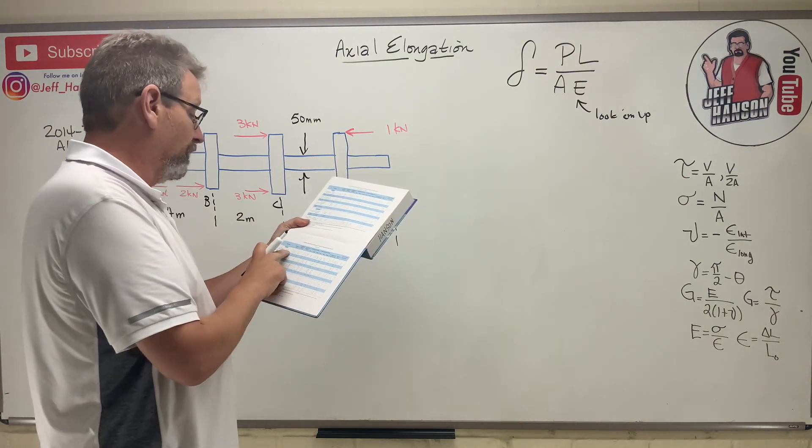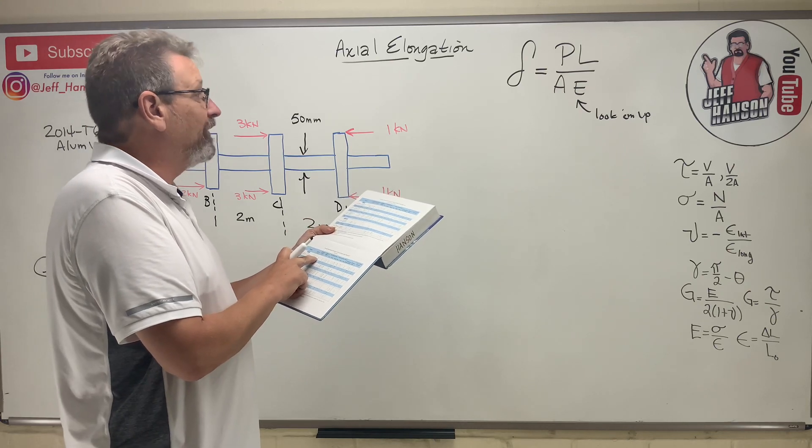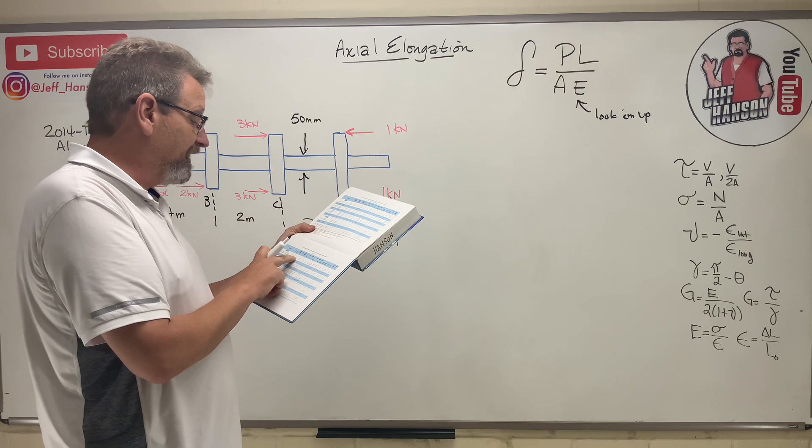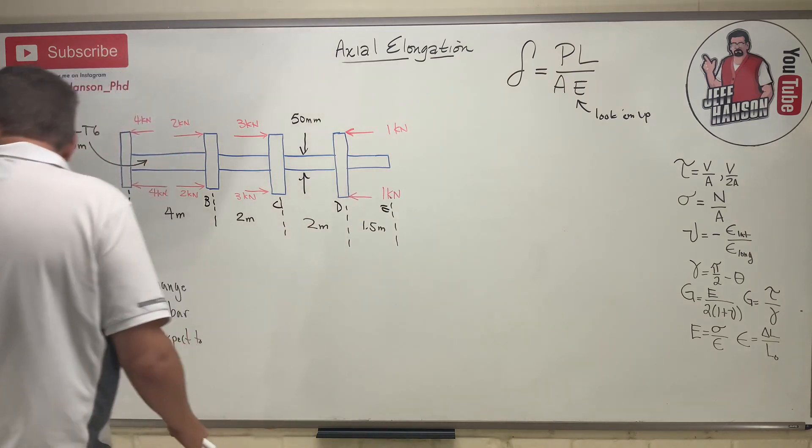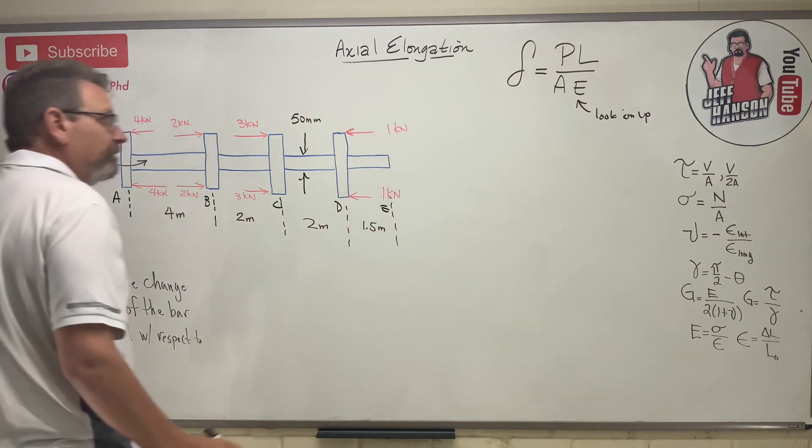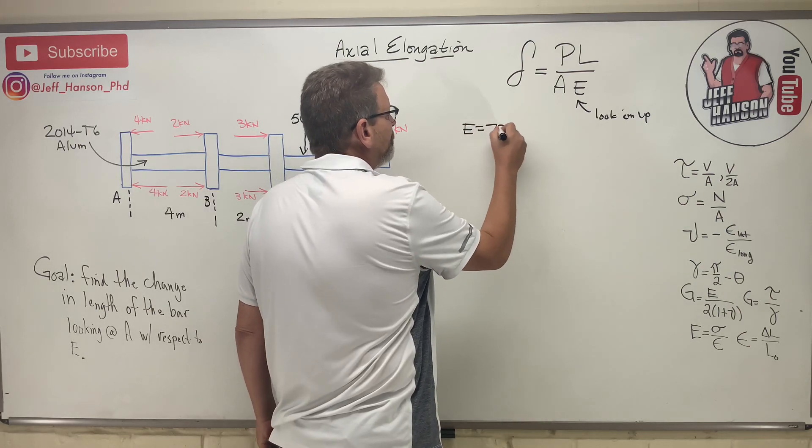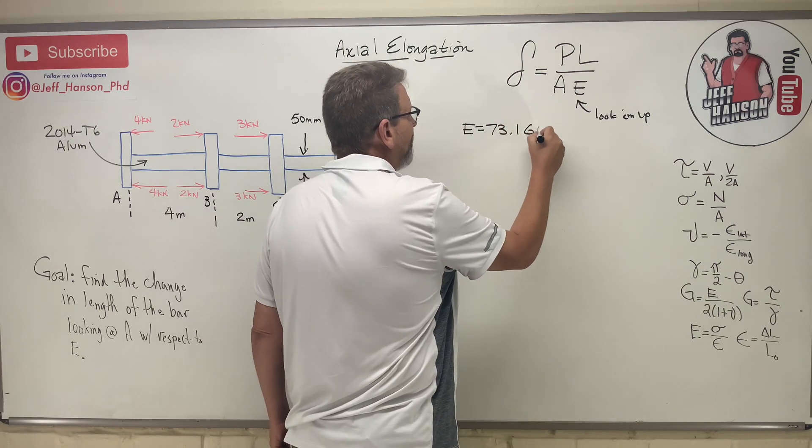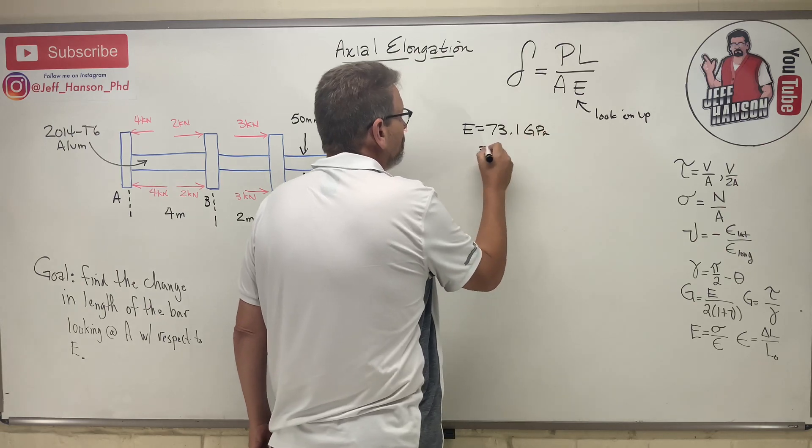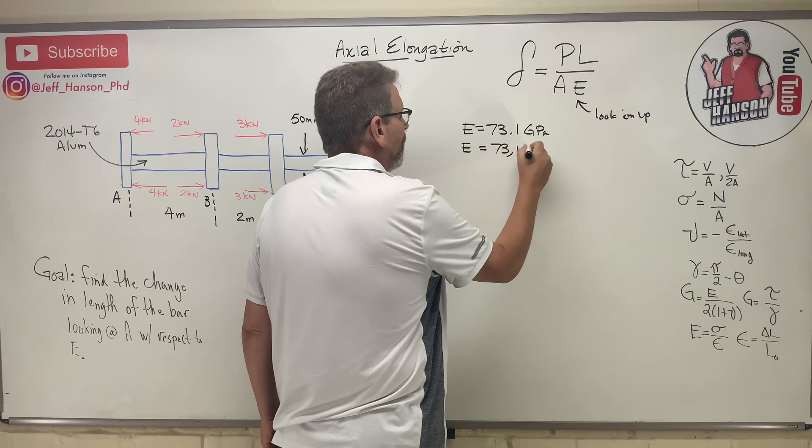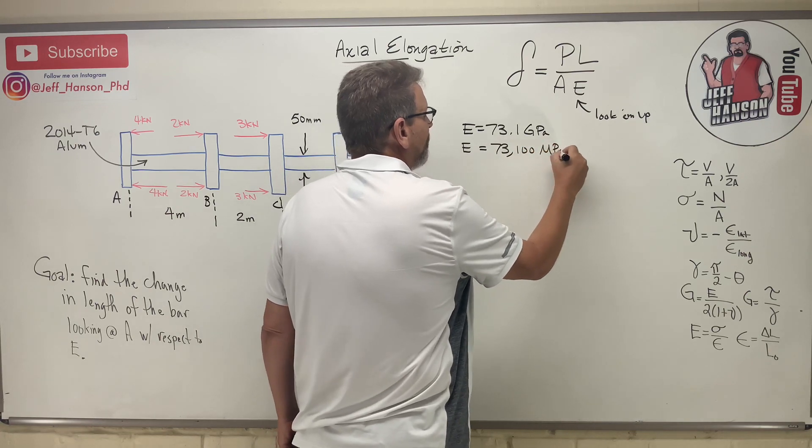We go to the SI table for 2014 aluminum - that's the very first one on the table. We need to look up E, the modulus of elasticity, and it's 73.1 gigapascals.